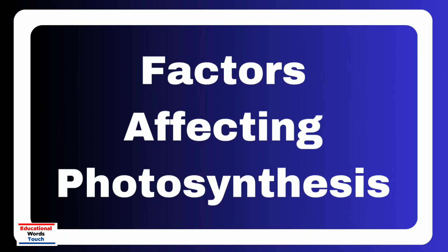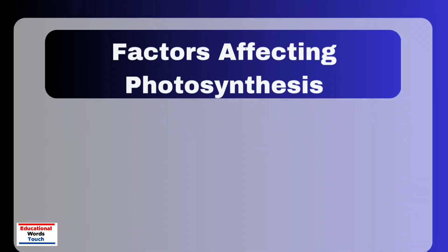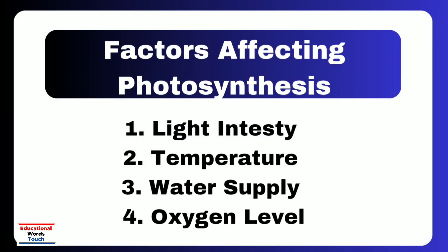The rate of photosynthesis is influenced by several environmental and internal factors. Light intensity plays a major role, as photosynthesis increases with rising light levels until it reaches a saturation point, after which no further increase occurs. Carbon dioxide concentration is another key factor since it is one of the raw materials for glucose production. Low CO₂ levels limit photosynthesis, while higher levels enhance it until other factors become limiting.